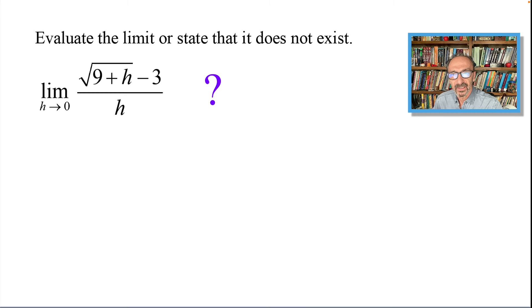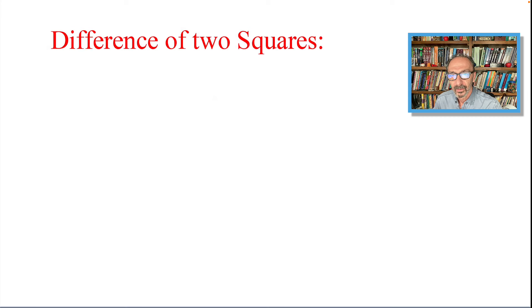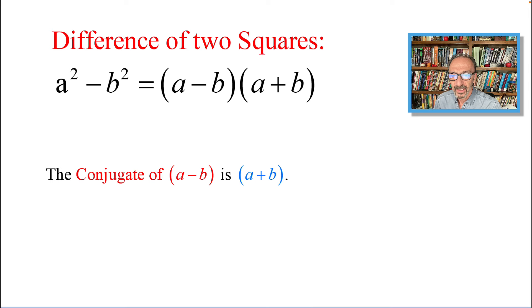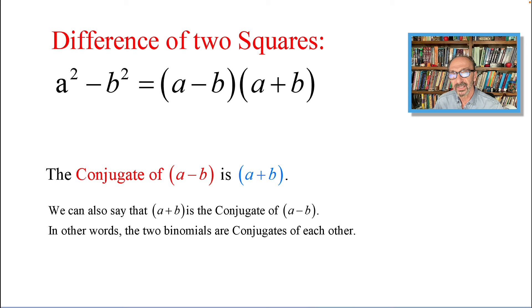To evaluate the limit or state that it does not exist: the limit of the square root of 9 plus h minus 3 divided by h as h approaches zero. We need some ideas as introduction to start. The difference of two squares will be defined as follows: a squared minus b squared equals (a minus b) times (a plus b).